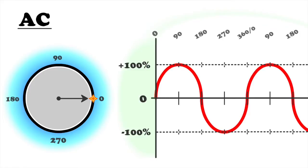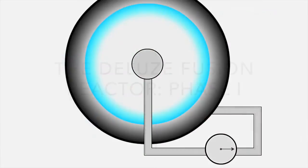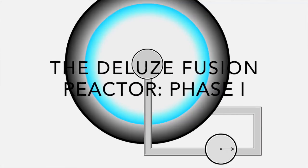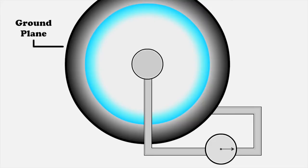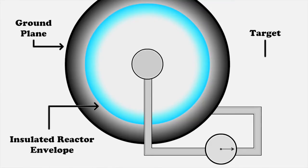The phase one Deleuze fusion reactor has a physical target. A spherical version has a centered spherical target concentrically enclosed by a vacuum tight non-conductive envelope shown in blue. A spherical conductive ground plane shown in black separated by an insulating layer encloses this envelope. A high voltage AC power supply is connected between the target and ground plane shown as a circle with an enclosed vector.